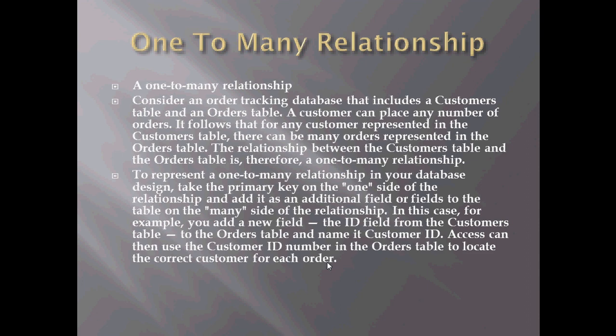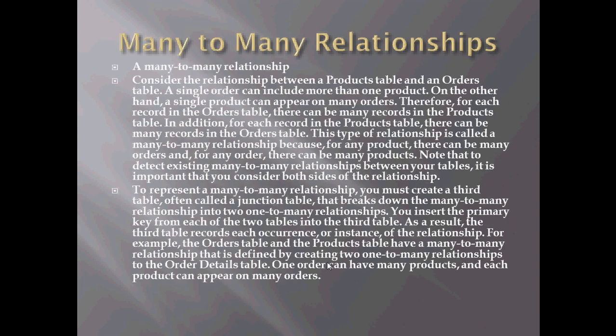Many-to-many relationships: consider the relationship between a products table and an orders table. A single order can include more than one product; on the other hand, a single product can appear on many orders. That's a good example of two tables that can have a very large relationship between each other — that would be considered a many-to-many relationship. What is so important is you don't want to label a many-to-many relationship as a one-to-many relationship, because when you go to run queries, reports, or extract data, you're not going to get the proper information — there will be gaps in the data.